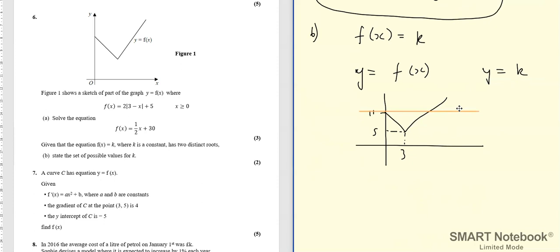So anything above 11, there's only one intersection of that horizontal line with f(x). Anything below 11 I've got two, all the way up to as low as five, but at five there's only one intersection.